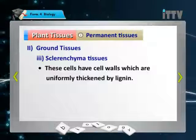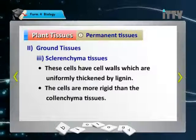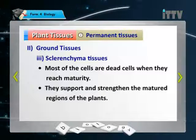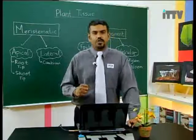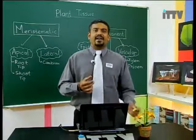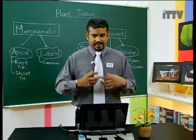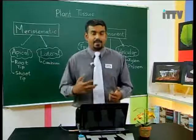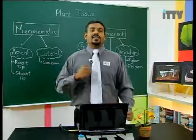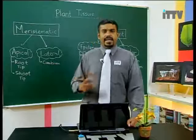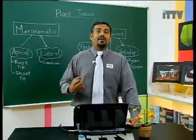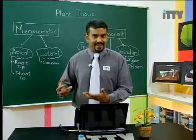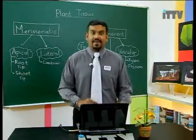Sclerenchyma tissues support and strengthen the mature regions of the plant. As the plant matures it becomes heavier, with water and food being carried through it — so more support is needed, which sclerenchyma provides. Lignin is a compound the plant makes itself to fortify the cell wall, making it stronger — similar to how concrete makes walls in your home stronger.